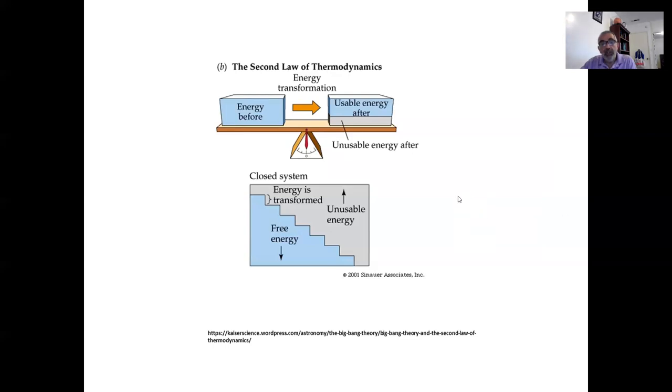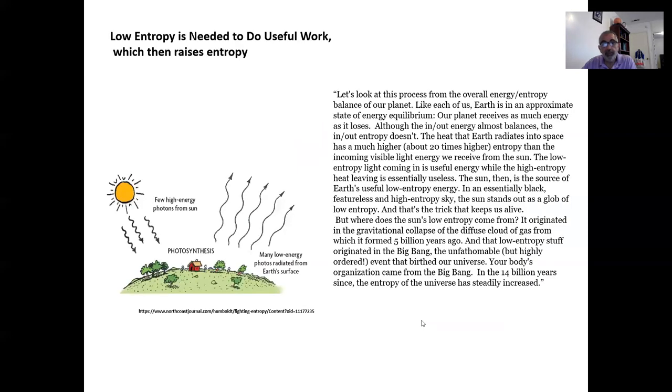And all of this boils down to that the second law of thermodynamics is basically a law that says that usable energy, energy to do useful work, decreases with time. So if I have a whole bunch of usable energy before, then now I have some usable energy and some unusable energy. And with time, free energy, usable energy to do useful work decreases and unusable energy increases. That is what the second law of thermodynamics is saying. And so once again, low entropy is needed to do useful work, which then raises entropy.